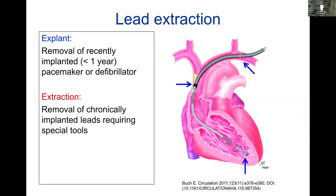Now I'll talk a little about lead extraction for the last part of the talk. First, I want to talk about definitions, because there's a difference between an explant and an extraction. An explant is where, say, you implant a dual chamber pacemaker and six weeks later the patient has a pocket infection — everything needs to come out. You just use local anesthesia, open up, take the pacemaker out, unpick the stitches, and take the leads out, and they will slide out as easily as they went in.